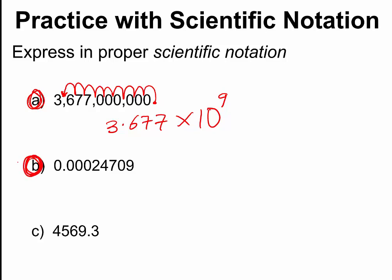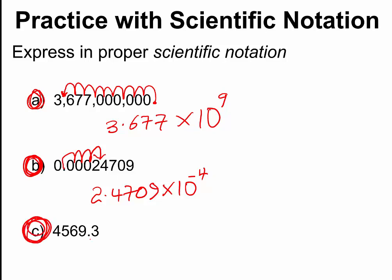In example B, we jump over 4 positions, so the number becomes 2.4709 times 10 to negative 4, because the original number is smaller than 1. In the last example, the original number is larger than 1. We move the decimal behind the first non-zero digit, jumping over 3 positions. The number becomes 4.5693 times 10 to the power of 3.